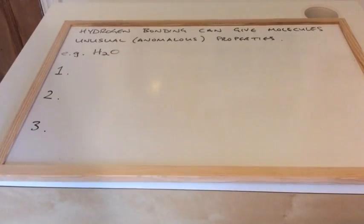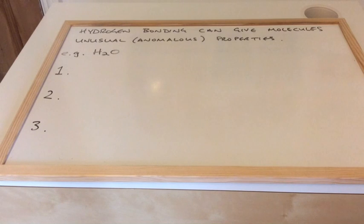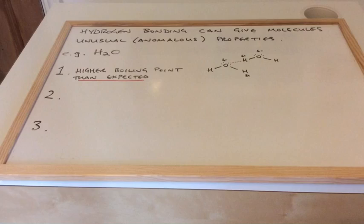Now because hydrogen bonds are quite strong intermolecular forces, they tend to give molecules that contain them unusual properties, or another word for that is anomalous properties. We'll look at water, it has three unusual or anomalous properties. The first one is it has an unusually high boiling point, or a higher boiling point than expected. You can't just say water's got a high boiling point, you have to say it's higher than expected.